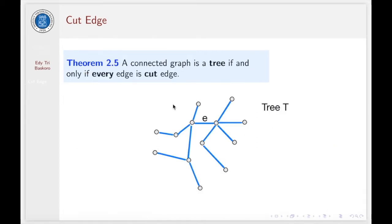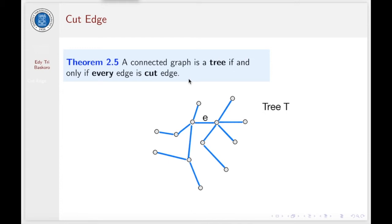Now we are going to see this wonderful theorem: a connected graph is a tree if and only if every edge is a cut edge. The illustration shows that if you have a tree T, whenever you remove any edge in this tree, the tree becomes disconnected, because a tree is a minimal connected graph. So whenever you remove one edge, the tree becomes disconnected — the number of components of T minus E for any edge E in T will be greater than the number of components of T.